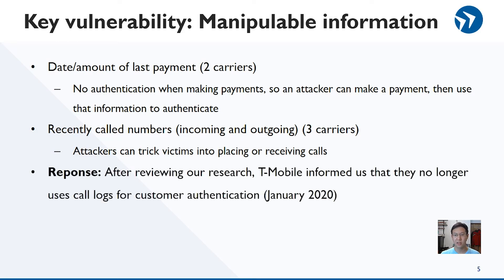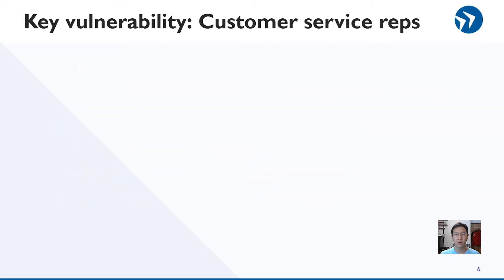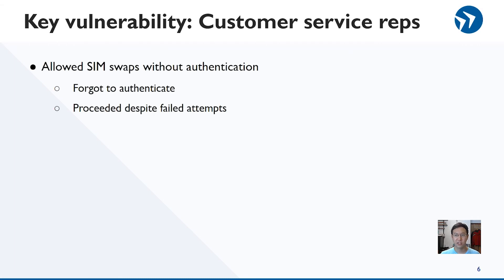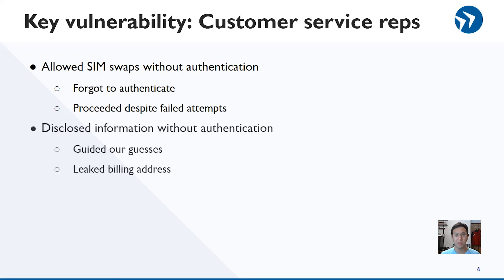To their credit, after reviewing our research, T-Mobile informed us that they had made changes to their customer authentication policy. We also found vulnerabilities in CSRs and by extension CSR interfaces. On multiple occasions, CSRs at two carriers allowed us to SIM swap without ever correctly authenticating. Some carriers even disclosed personal information without authentication, including answers to authentication challenges.